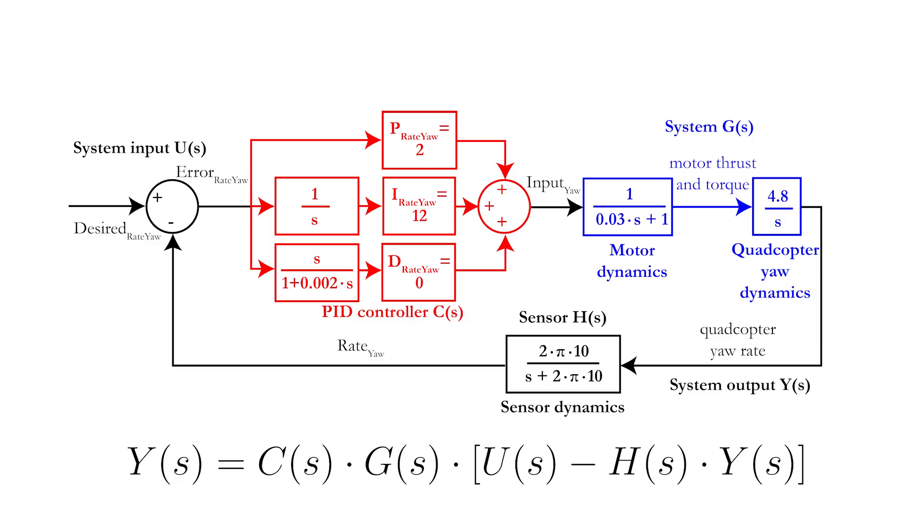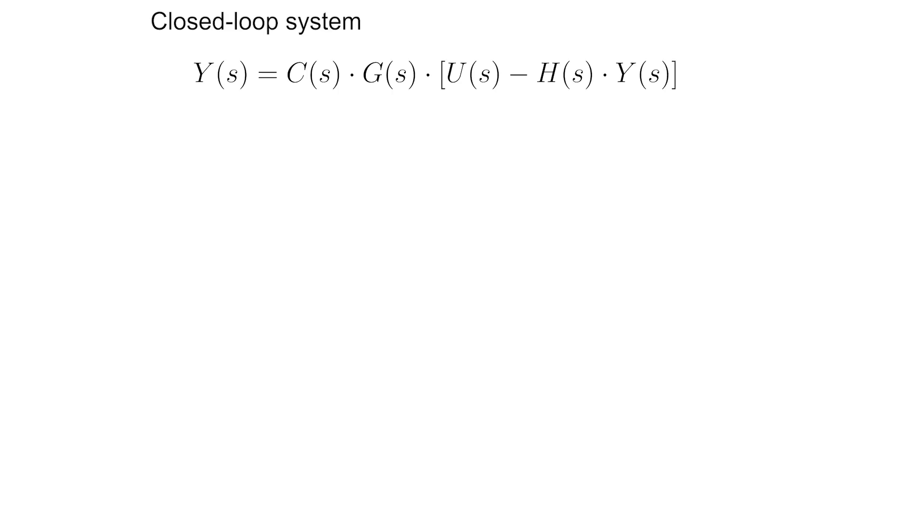First, we need a mathematical description of the closed-loop controller that we have created. This is relatively simple. The output of the system Y is equal to controller C multiplied by the system G, which in turn needs to be multiplied by the system input U minus the sensor dynamics H multiplied again with the system output Y. Now rewrite this equation such that the system output Y is isolated and written in function of the system input U.